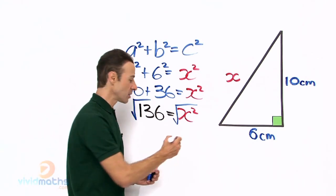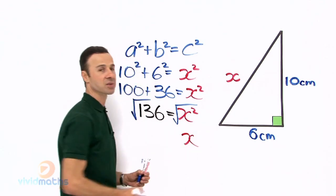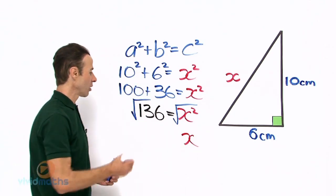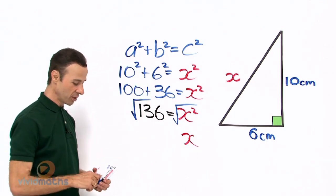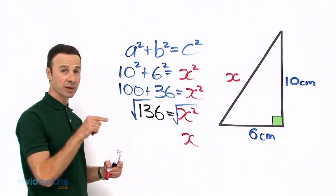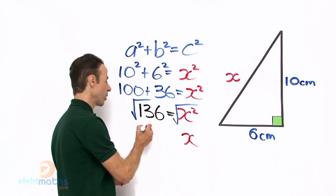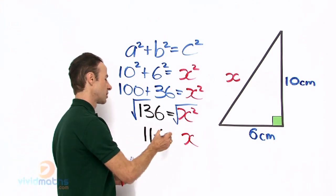So square root of x squared is just x all by itself, and on the left hand side the square root of 136 is simply, on the calculator, 11.66.